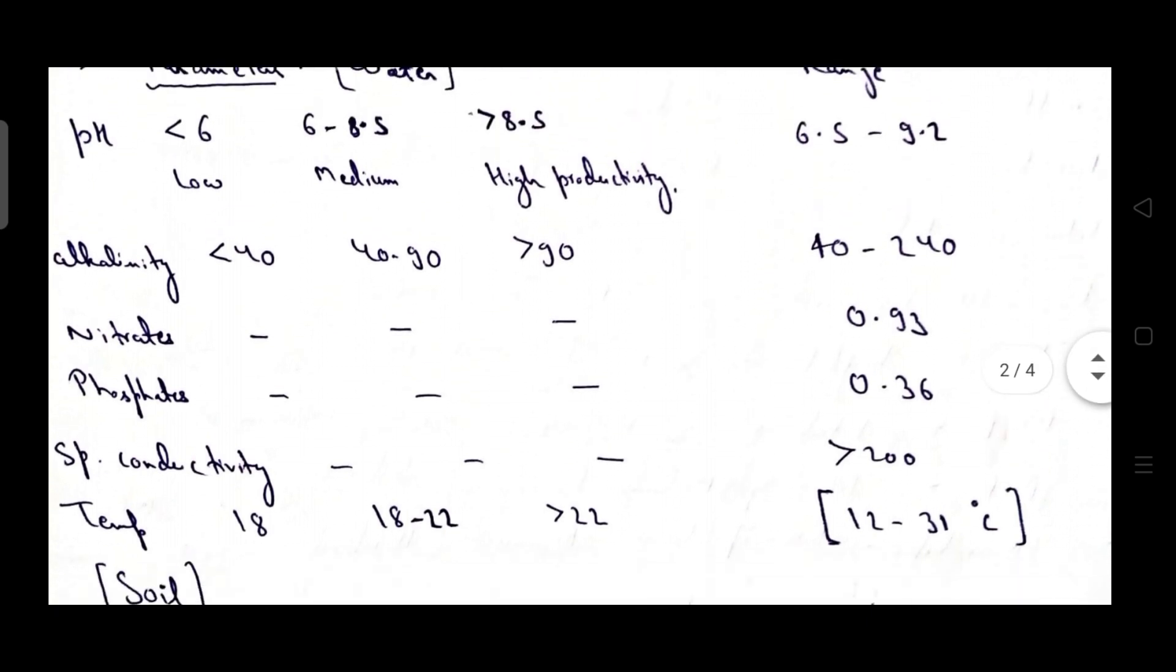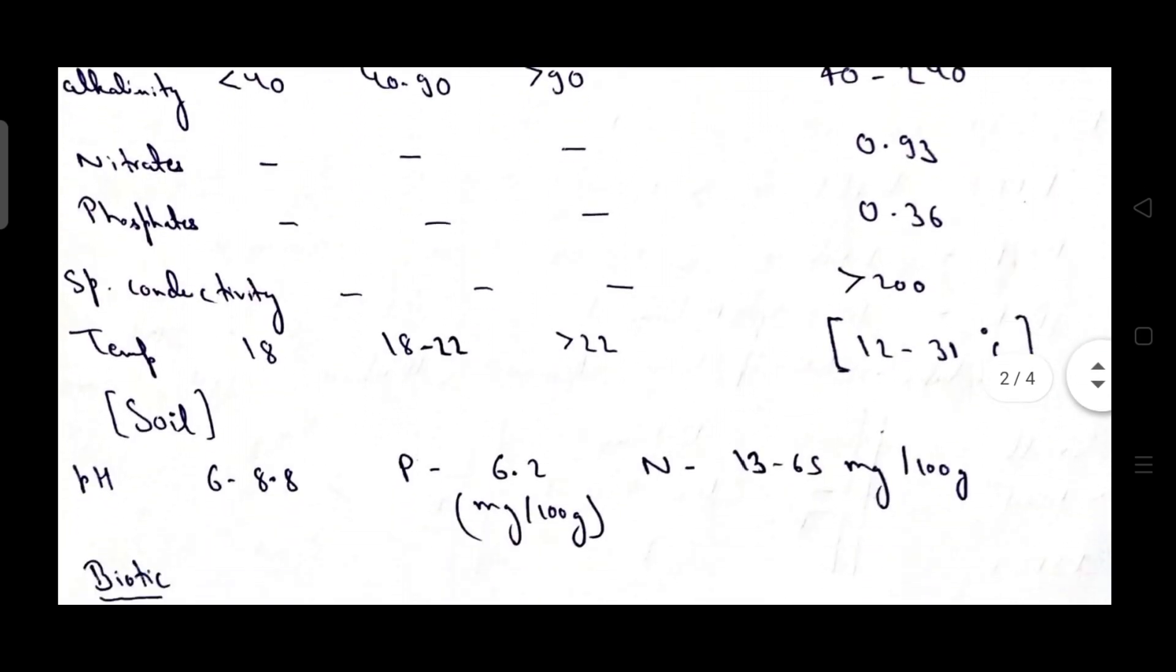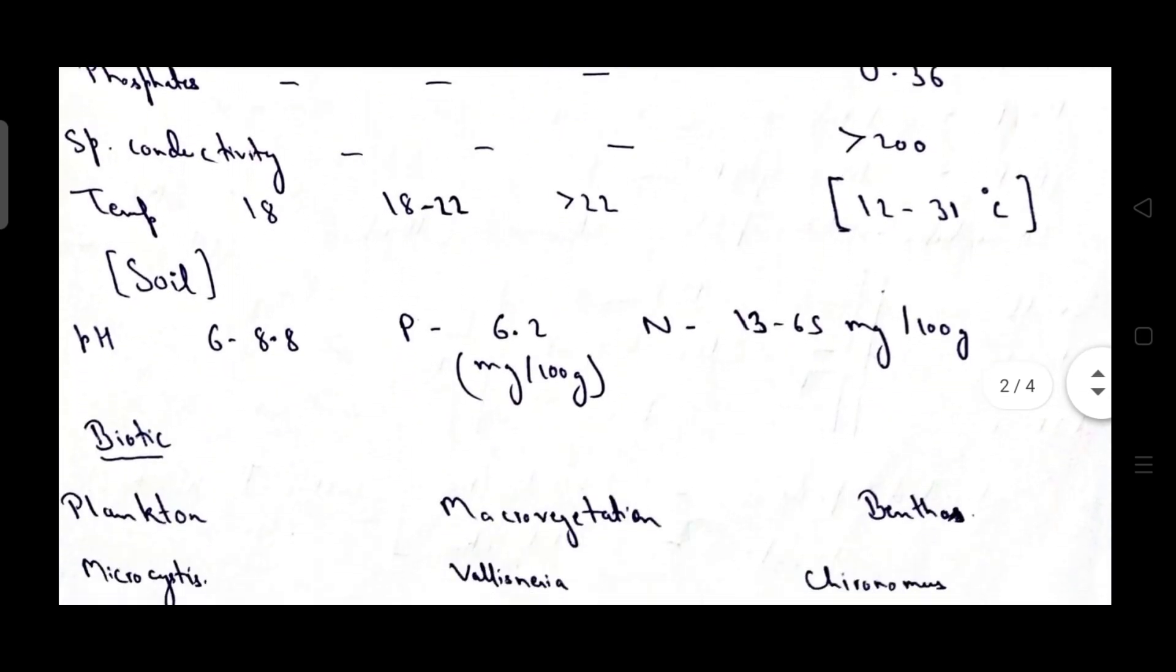And you can see here I've also mentioned that for low productivity, for medium productivity and for high productivity what kind of factors you need for water parameter. I mentioned that if the pH is less than 6 then it will lead to low productivity. If pH is between 6 to 8.5 it will lead to medium productivity. pH greater than 8.5 it will lead to high productivity. So I mentioned the important points related to all these you can see from here.